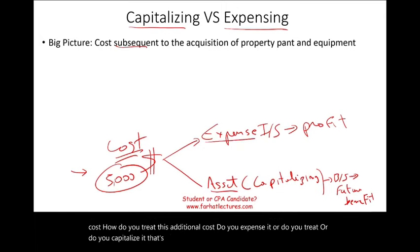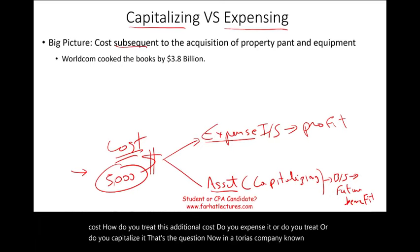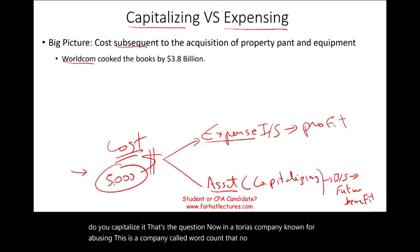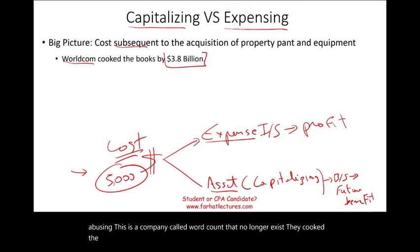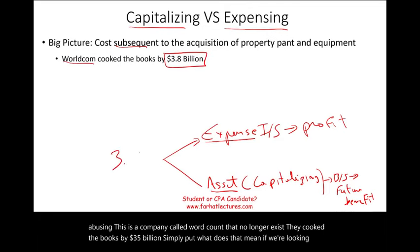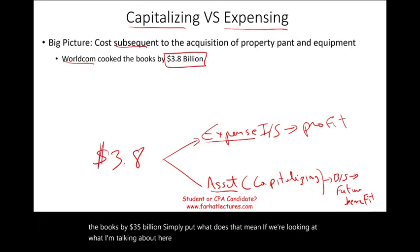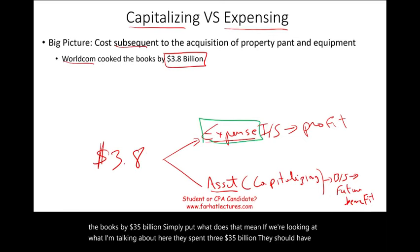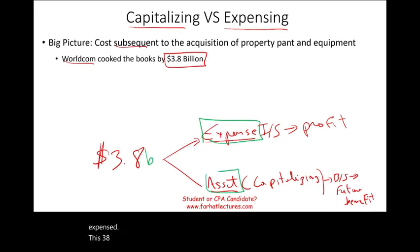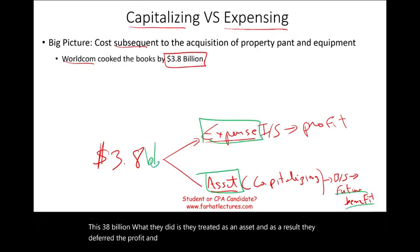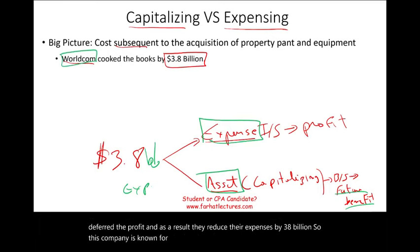That's the question. A notorious company known for abusing this is a company called WorldCom, that no longer exists. They cooked the books by $3.5 billion. They spent $3.8 billion that they should have expensed, but instead they treated it as an asset. As a result, they deferred the profit and reduced their expenses by $3.8 billion. This company is known for abusing the rules for capitalizing versus expensing.